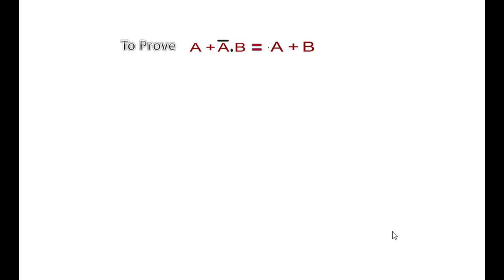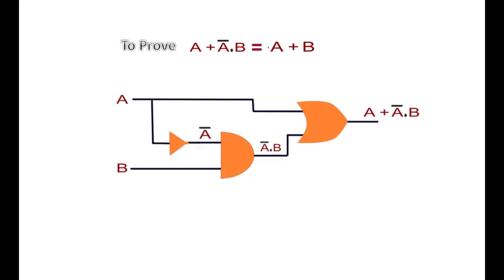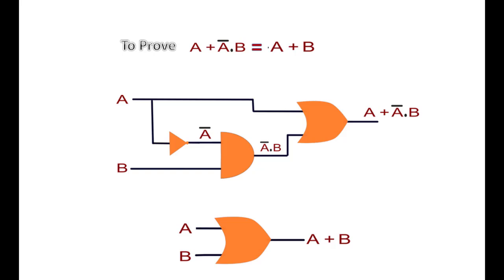The first example is: A or A-bar AND B equals A or B. To implement the left-hand side we require three gates — this is how the left-hand side is implemented using basic logic gates. To implement the right-hand side we just require one single gate. So this is how, when we use the laws of Boolean algebra, the circuit gets reduced. Whatever we get with the above three logic gates, the same result is obtained with only a single logic gate.